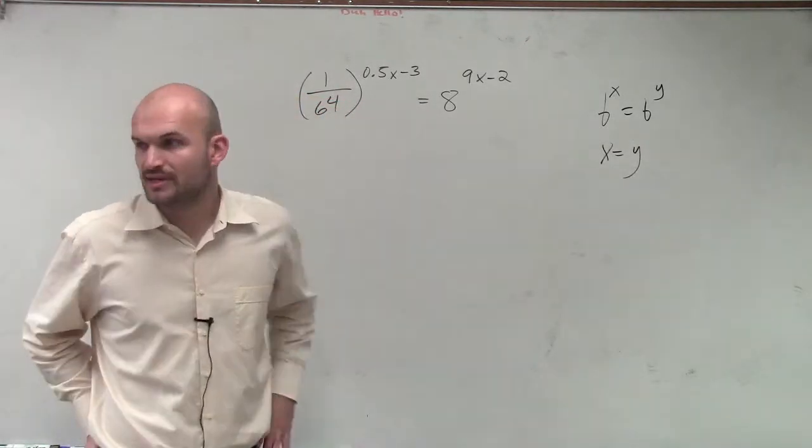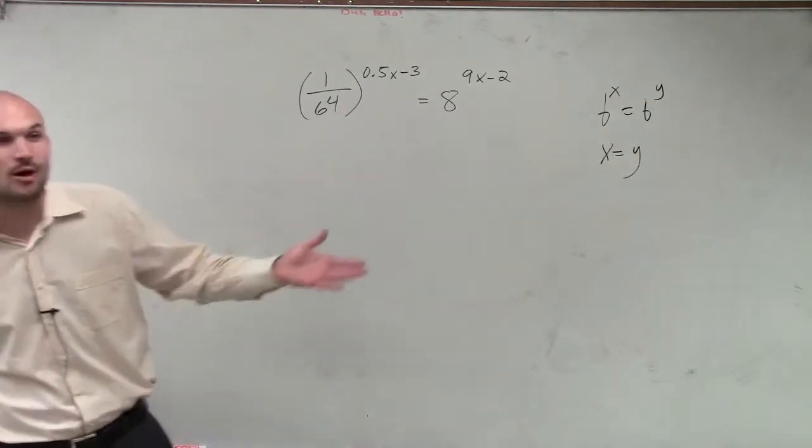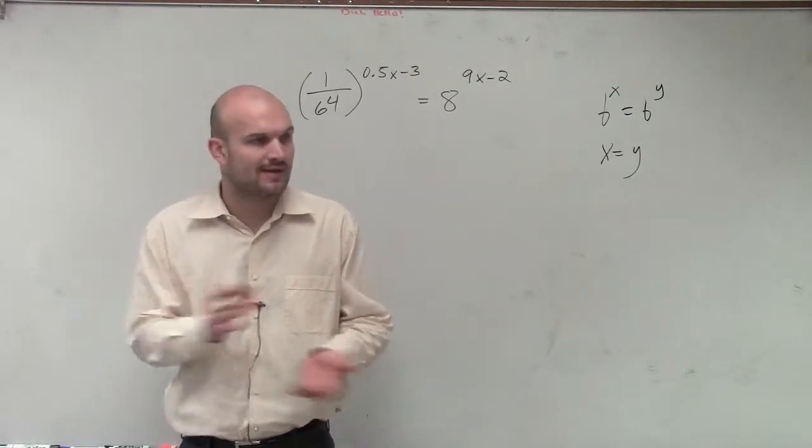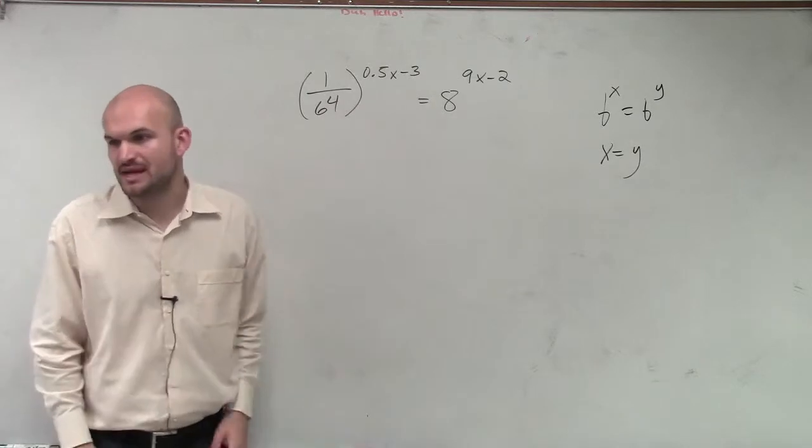But this doesn't apply right now, because 1 over 64 is not equal to 8. Now last time, all we did was we took 4 squared and that equaled 16, and that's how we could rewrite it. So now I need to say, how can I make these two have the same base?